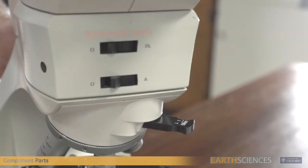Additionally, between the binocular viewing tube and objectives is the Bertrand lens, analyzer and wave plate.